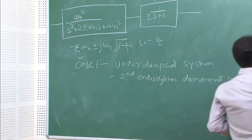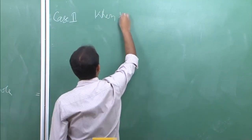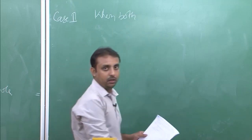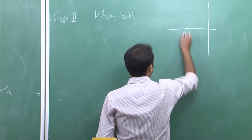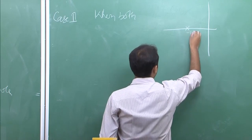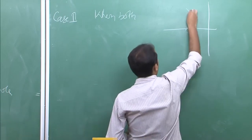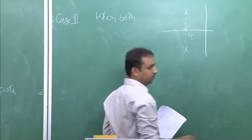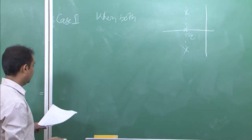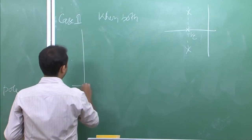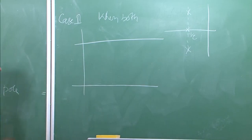Case 2: Both first-order and second-order poles are dominant poles — meaning they lie at approximately the same distance from the imaginary axis. In this case, the result is a critically damped response, which is very similar to a pure second-order critically damped system.